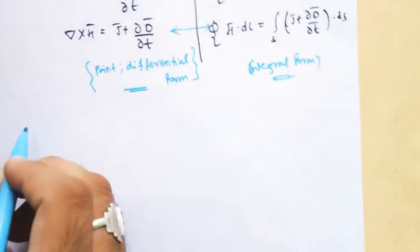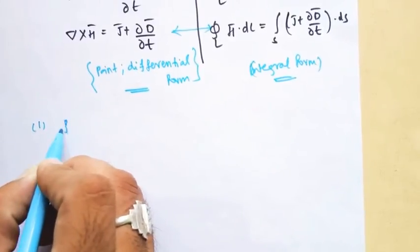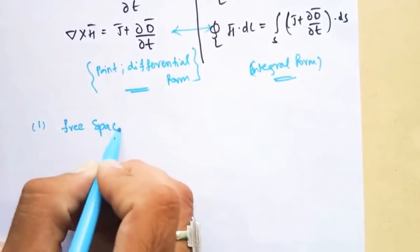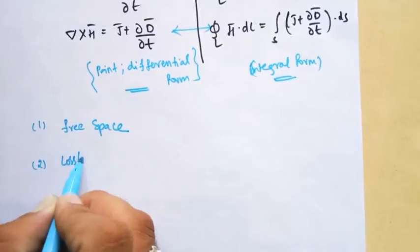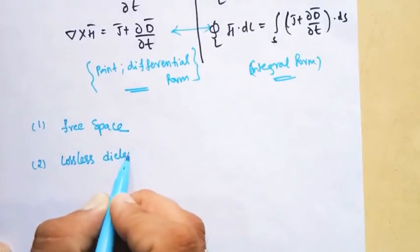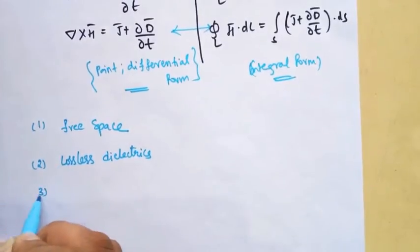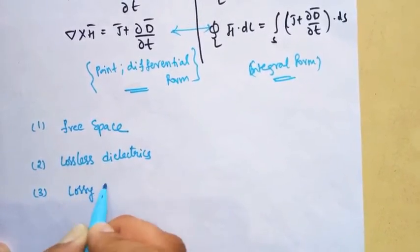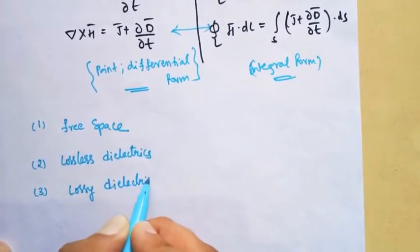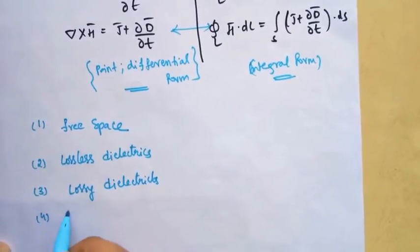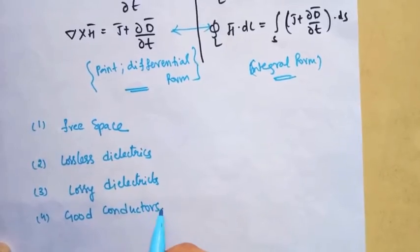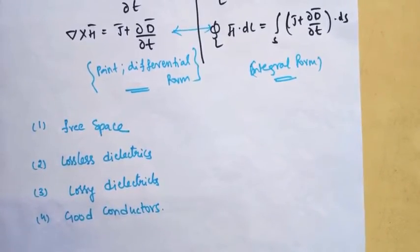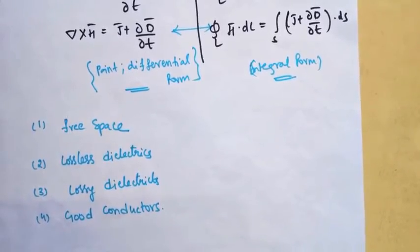The different conditions are: if it is in free space — that is our first condition — if it is in a lossless dielectric or a lossy dielectric, and last but not least, a good conductor. We will discuss how the electromagnetic wave propagates in each of these mediums.